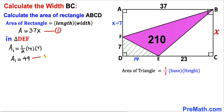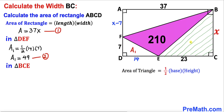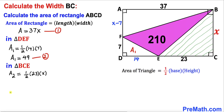Now let's calculate the area of triangle BCE. Using the triangle area formula, the base is 23 and the height is x. So A₂ equals one-half times 23 times x, which gives us 23x divided by 2. We'll call this Equation 3.